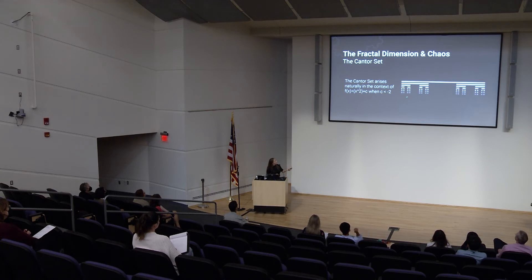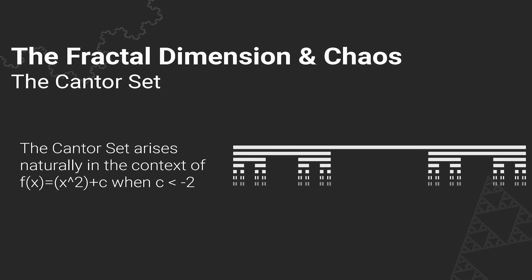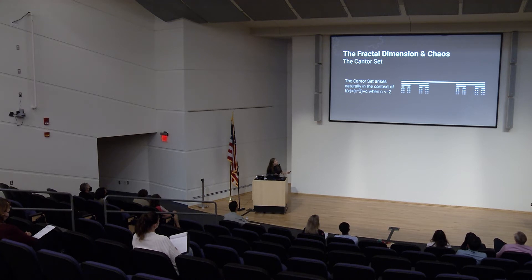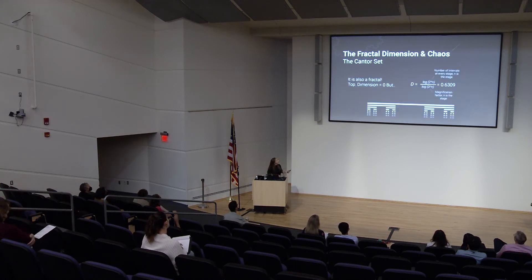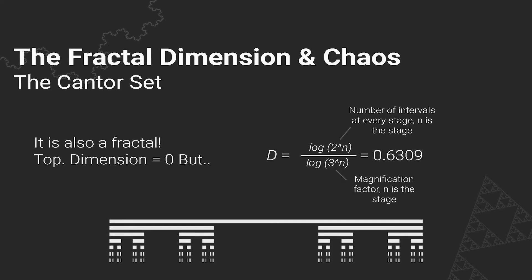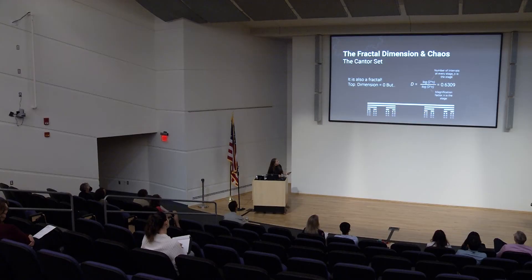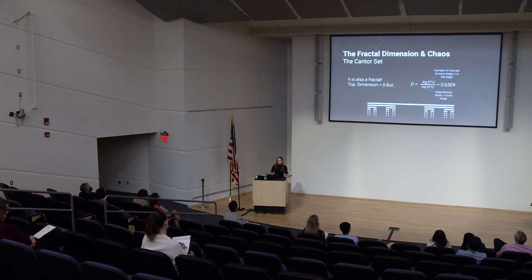Now let's look at the Cantor set, which is a really good example of dynamics. You take the middle third of each piece and delete it — it keeps going infinitely. This has a topological dimension of zero because you can't move from one piece to another; there are no numbers in the gaps. But the fractal dimension is log(2^n) over log(3^n), where n is the stage number. This equals 0.6309, which is greater than zero. So the Cantor set is a fractal and exhibits dynamic behavior.